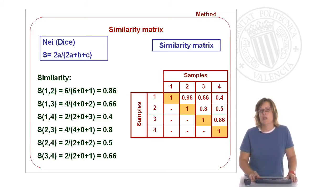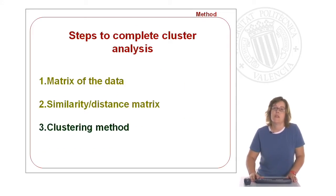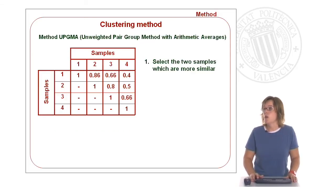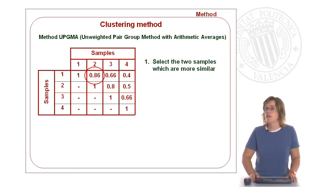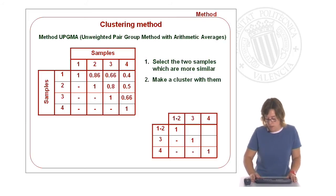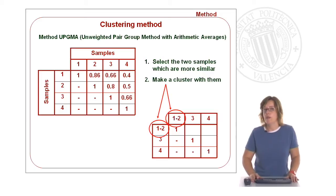A similarity between each sample and itself is one, because one sample is exactly the same as itself. Once we have this similarity matrix, we have to apply the clustering method. The one we are going to use in this example is UPGMA — unweighted pair group method with arithmetic averages. First we select those samples which are most similar. In our case, the highest similarity value is between samples one and two, so we make a cluster with these two samples and they disappear as individual samples.